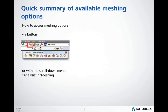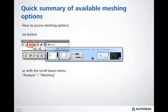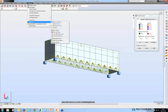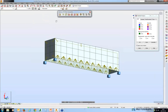In Robot there are two ways to access meshing options. You can either press the indicated button or use the scroll-down command menu and select Analysis > Meshing. Let me switch to Robot and show where you find these options in the real program. We go to Analysis > Meshing, or just press the indicated icon, and you have access to the options panel.